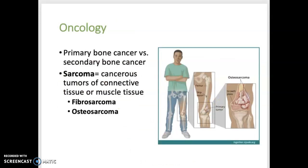Now, oncology related to bones. Primary bone cancer arises directly from bone tissue, whereas secondary bone cancer arises from another area of the body and metastasizes or spreads to bones. Sarcomas are cancerous tumors of connective tissues like bone, cartilage, or muscle. Fibrosarcoma develops in cartilage, whereas osteosarcoma develops in bone tissue.